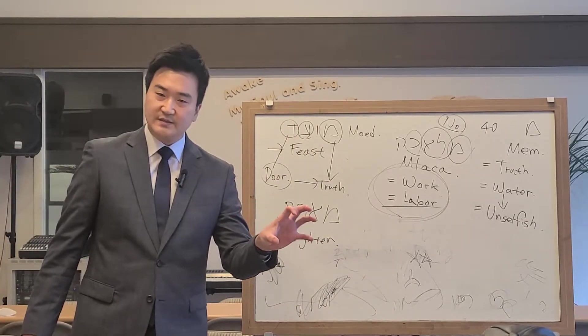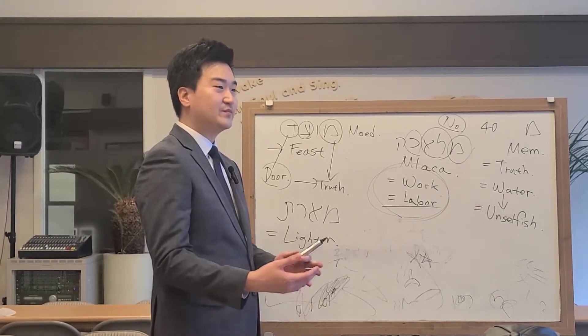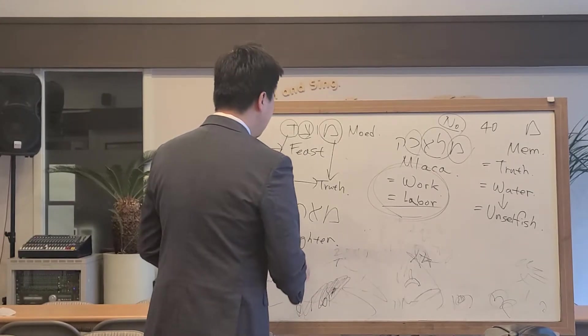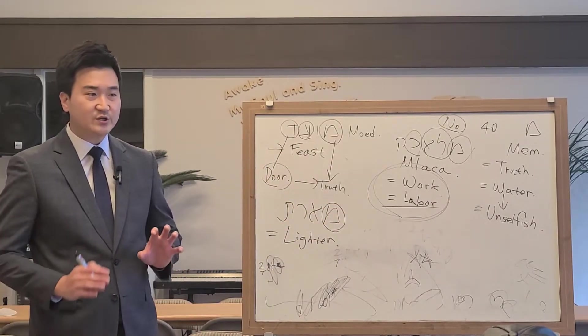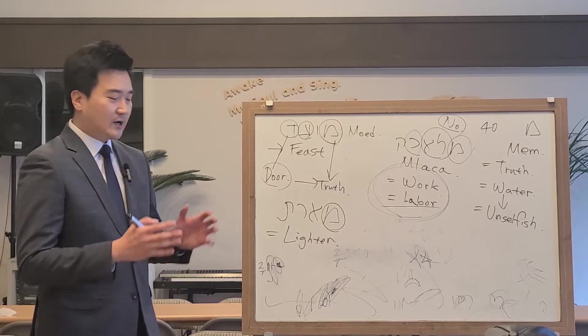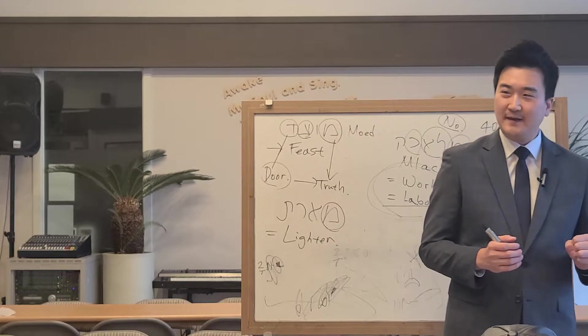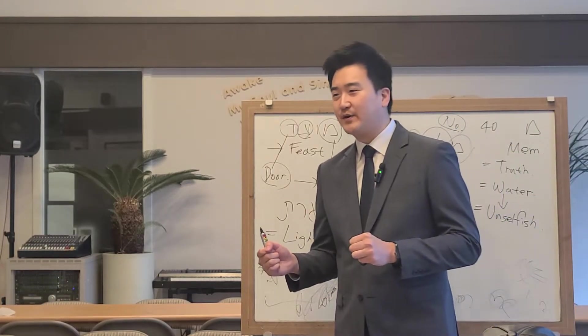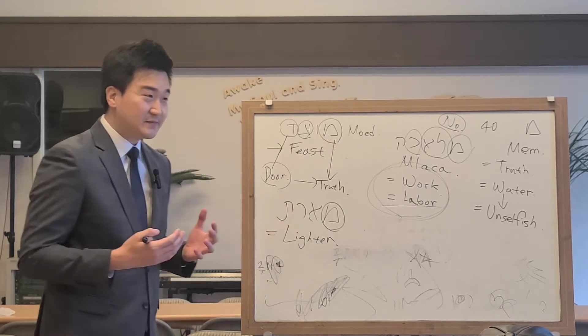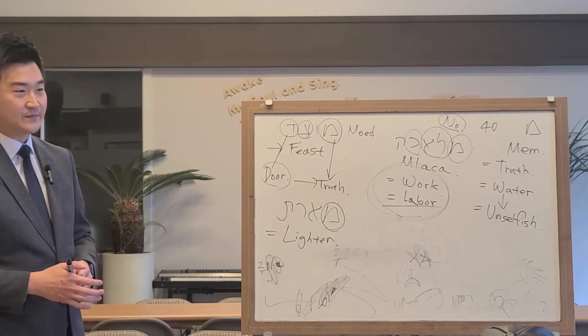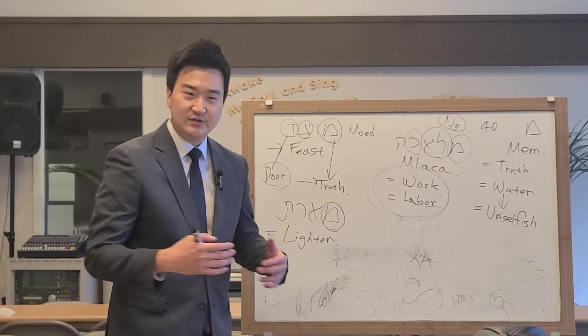So greater lighter is called sun, and the lesser lighter is called moon. So all the lighters have the truth to be shown to you. Greater lighter is compared as a husband, and the lesser lighter is compared to bride. The bride. The bride always receives the light from the greater light, the truth, the water, and reflects the light to the people.